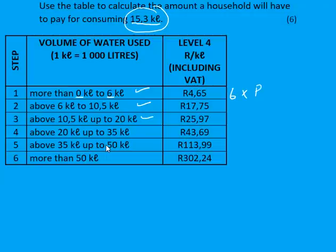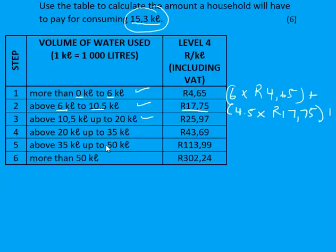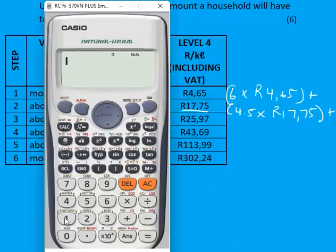For Step 2: take the maximum 10.5 minus the minimum 6, giving 4.5 kL, multiplied by the Step 2 rate of R17.75. For Step 3: the household only uses up to 15.3 kL, not the full 20 kL, so we take 15.3 minus 10.5, giving 4.8 kL, multiplied by the Step 3 rate.